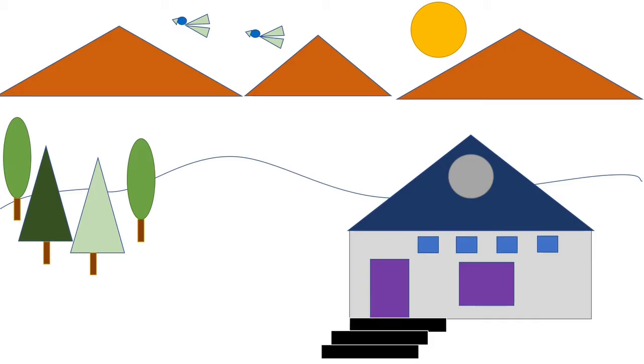And the next shape what we are going to see is square. Let us count the number of squares in this scenery. It is 1, 2, 3, 4 and 5. So, we have 5 squares in this scenery.